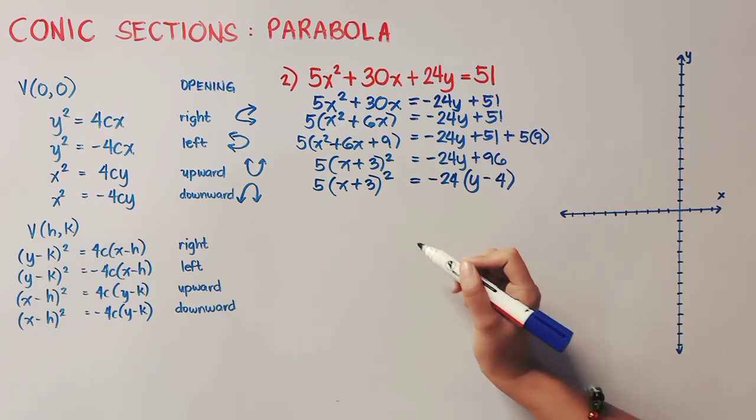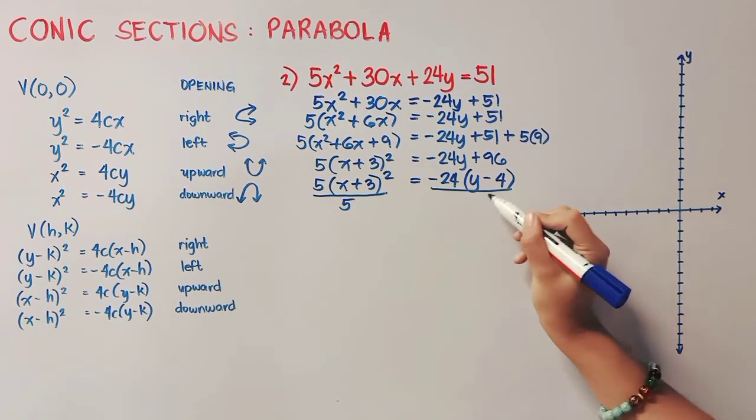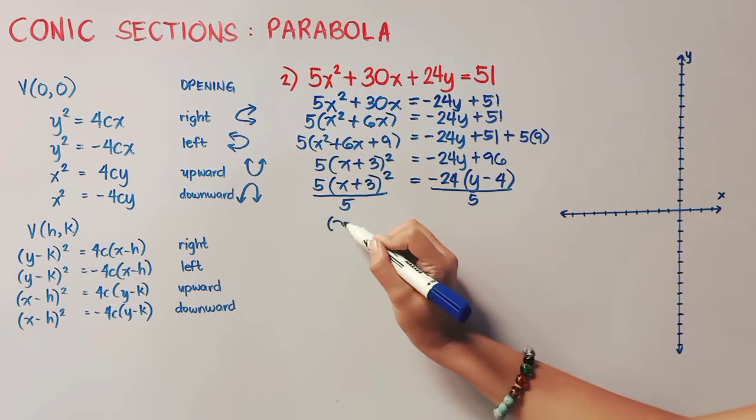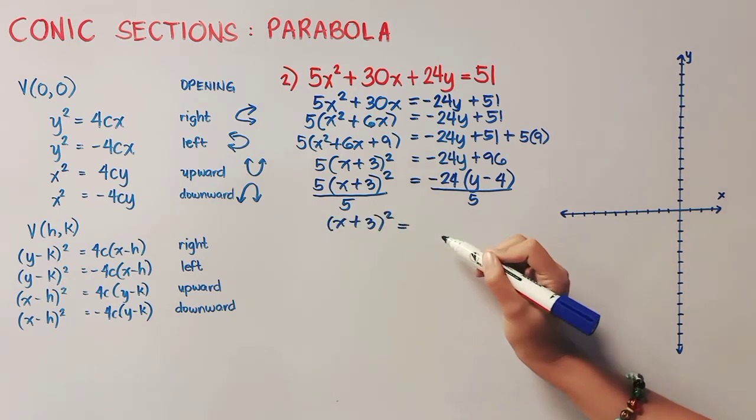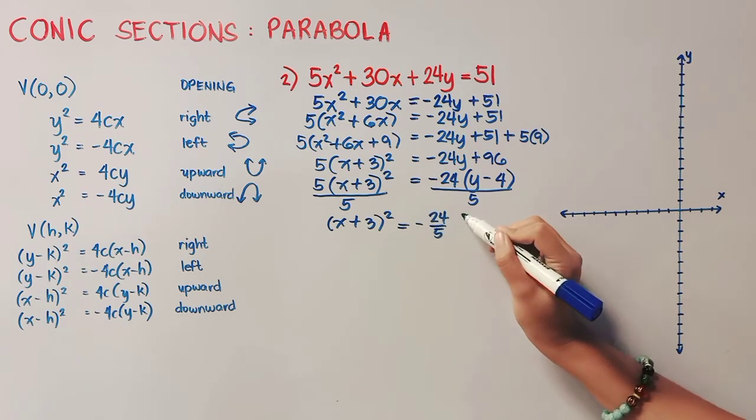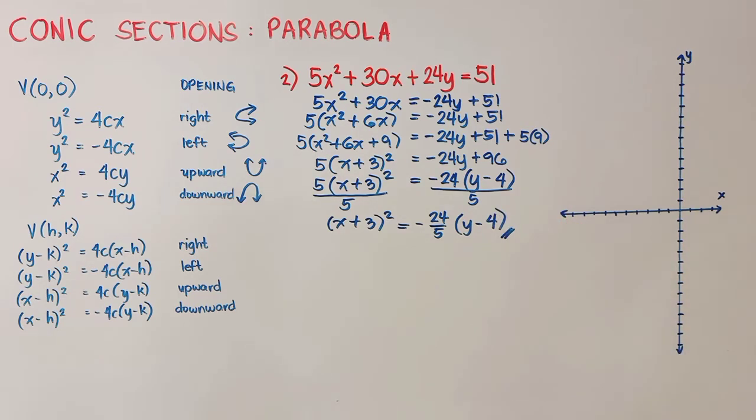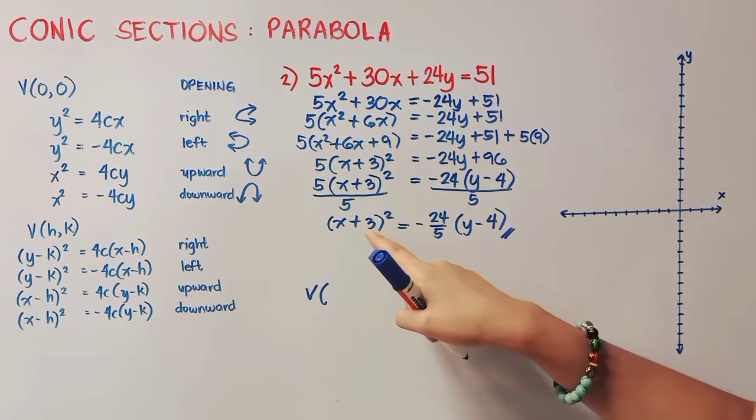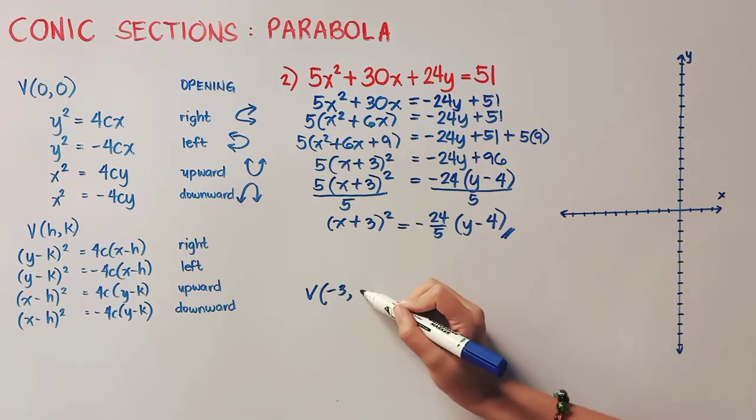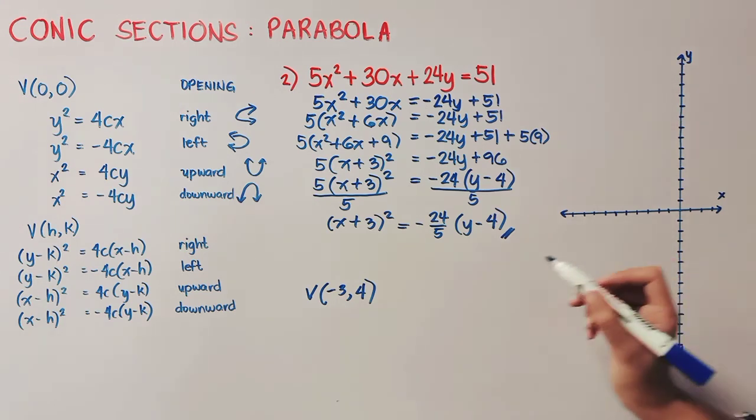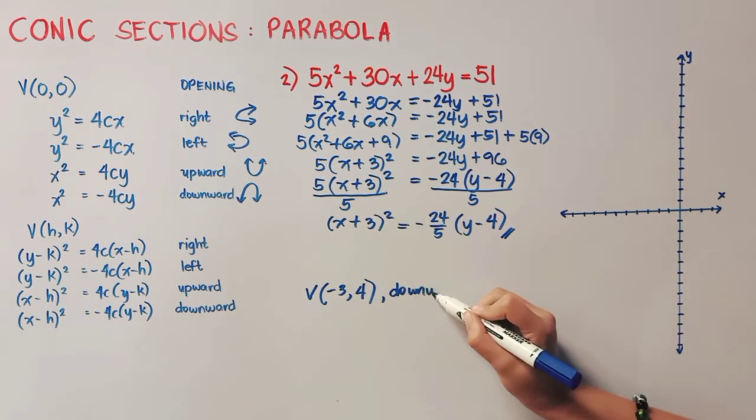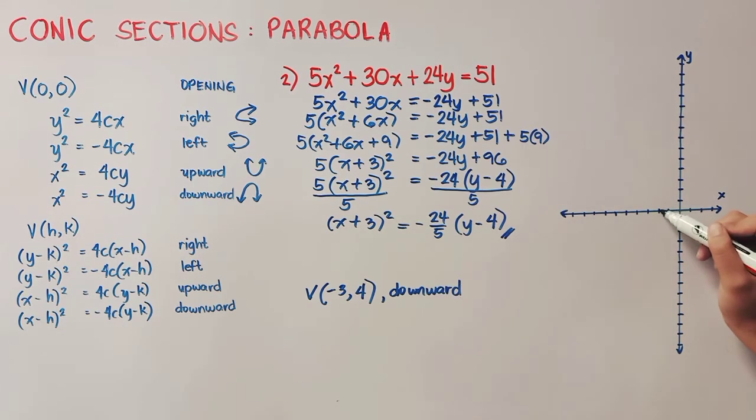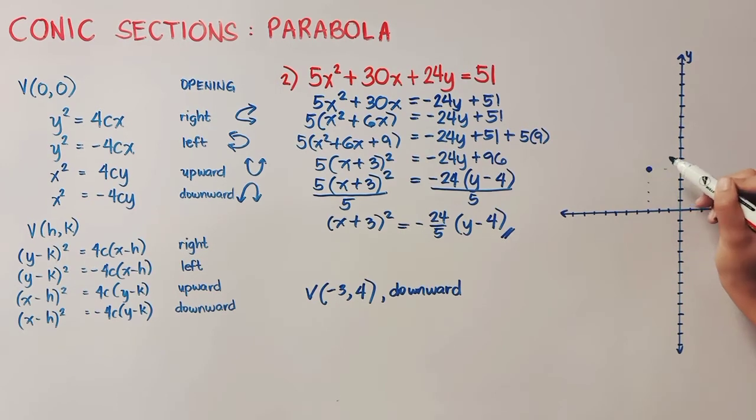Then we can divide 5 to both sides to get our final standard form. And that is quantity x plus 3 squared is equal to negative 24 over 5 times quantity y minus 4. Now looking at our standard form, it is similar with this form. That means to say our vertex is in hk where our h is positive 3 but in the form it's negative. So we'll make it negative 3. And then our k is 4. And our parabola opens downward. So I will plot first our vertex, negative 3, positive 4. So it is in this point. I will label this one v.